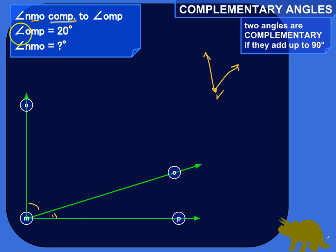Okay, second piece of information is angle OMP, O-M-P, is equal to 20 degrees. So, this guy is 20 degrees. Angle NMO is equal to question mark degrees. We don't know, and that's what we're going to figure out.